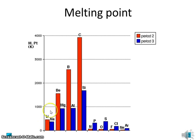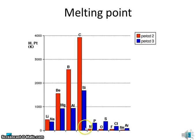The melting point increases up to a maximum at group 4 and then drops down. The last 4 elements in the period have very low melting points. That's certainly true for period 2, and it's also true for period 3 — an increase from sodium up to silicon and then a sudden drop down for the last 4 elements in the period.